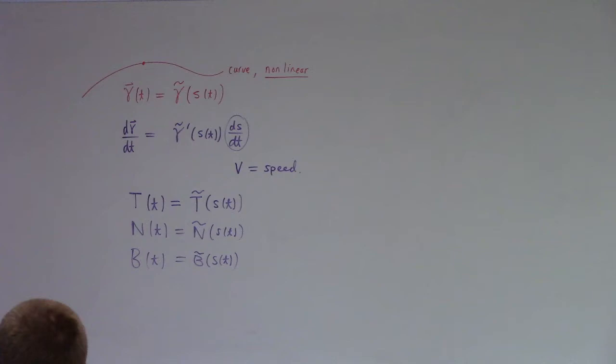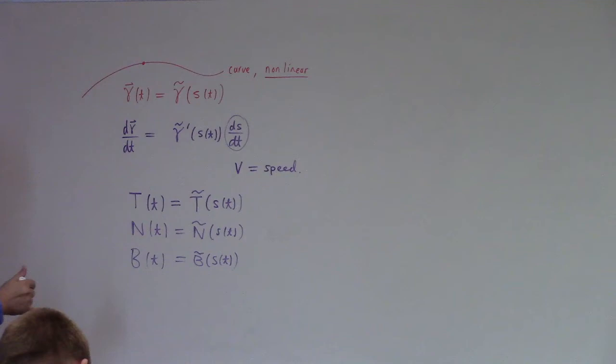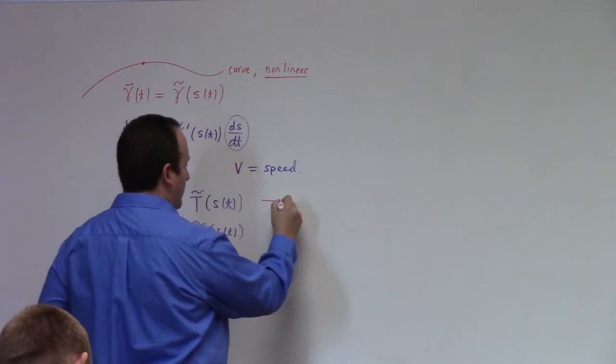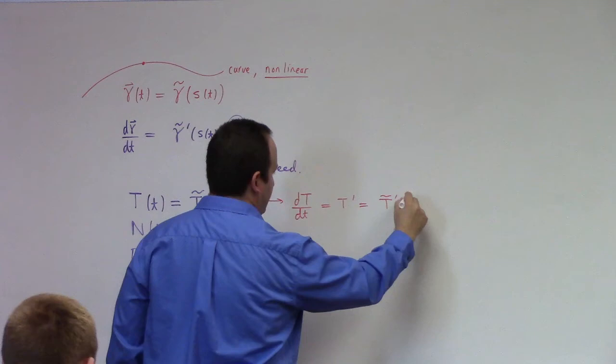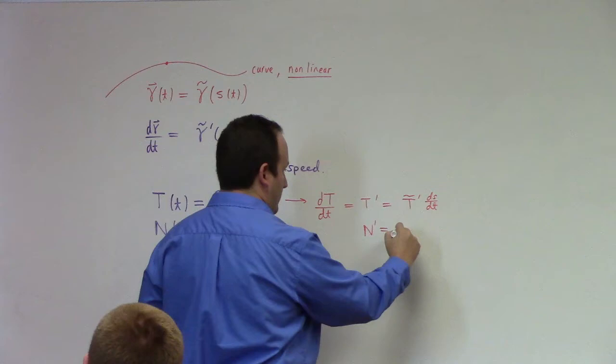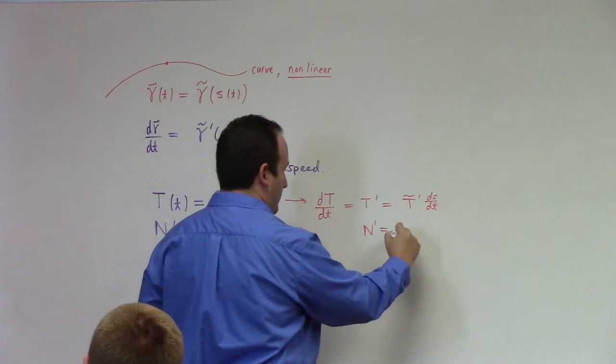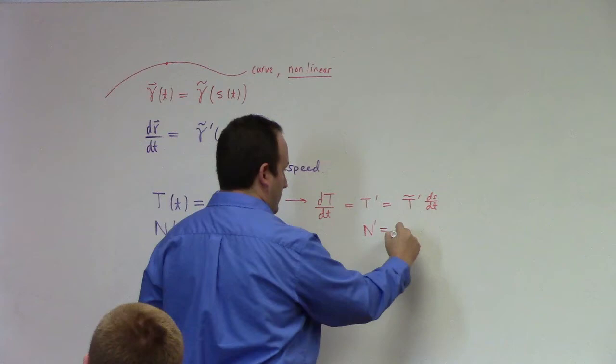You can call dS/dt the speed V — there's no reason that should be 1 when we're looking at the time parameter. We can define T(T) = T̃(S(T)), N(T) = Ñ(S(T)), B(T) = B̃(S(T)). The T̃, Ñ, B̃ are what I described last class for a unit speed curve. I didn't put tildes on everything last class to avoid confusion, but now I need to distinguish, so I am. By the chain rule: dT/dt = T̃' · dS/dt, and likewise N' = Ñ' · dS/dt, and B' = B̃' · dS/dt.